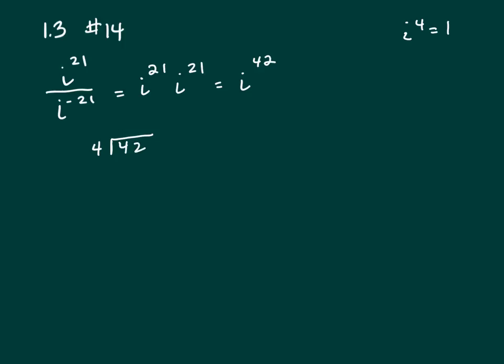So that will go in there 10 times with the remainder 2. You always take the i and raise it to the remainder. So i squared is negative 1. That's going to be your answer.